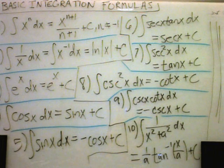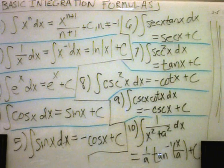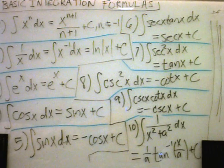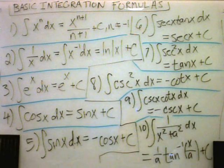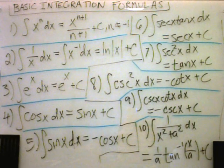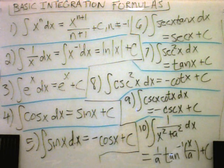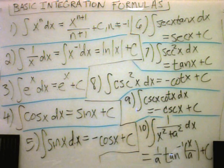The second one is the anti-derivative of 1 over x. If you integrate 1 over x, that's the case missing from number 1, which is the same thing as x to the negative first, you get ln of the absolute value of x.